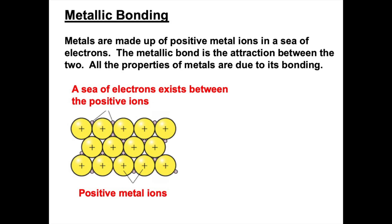To help us understand why metals have these properties we need to look closely at the bonding that exists in metals. Metals have metallic bonding. In metallic bonding we have positive metal ions surrounded by what we call a sea of electrons. The attraction between the electrons and the positive metal ions is called a metallic bond, and we can explain every property that a metal has using this very simple model.